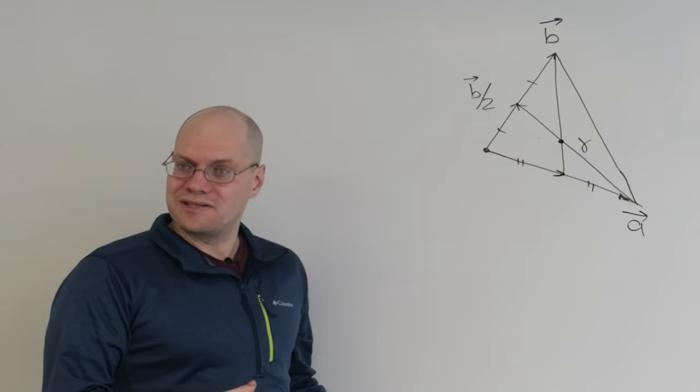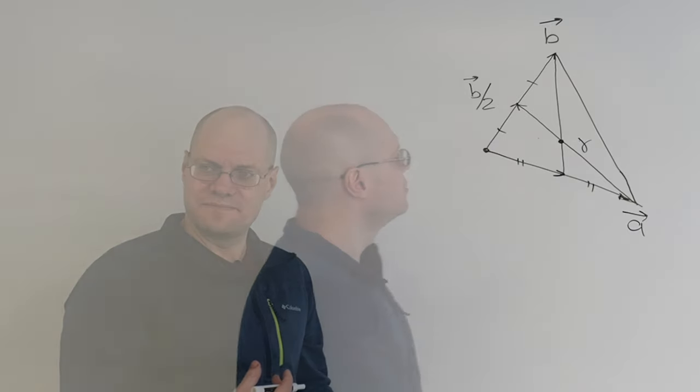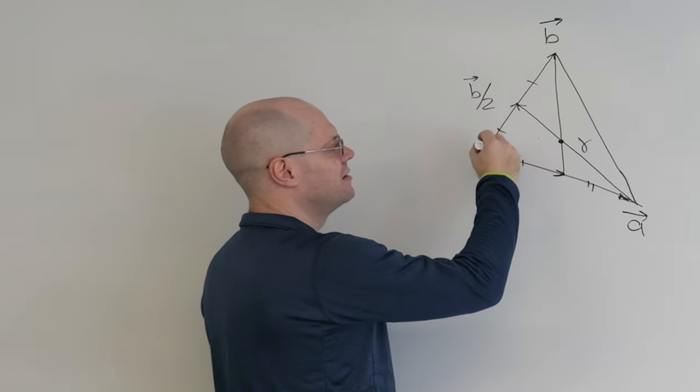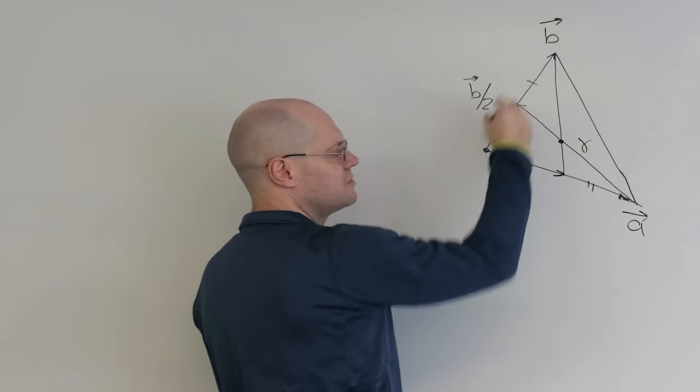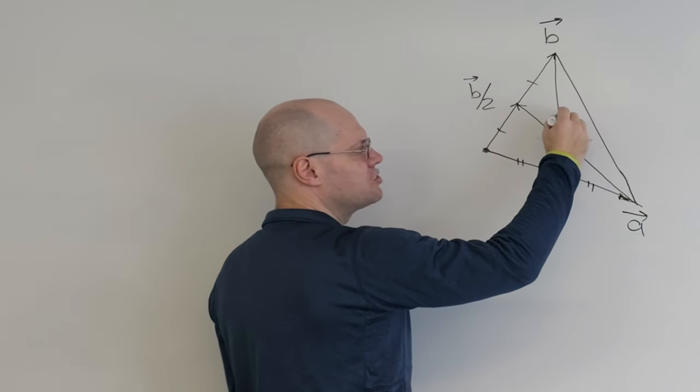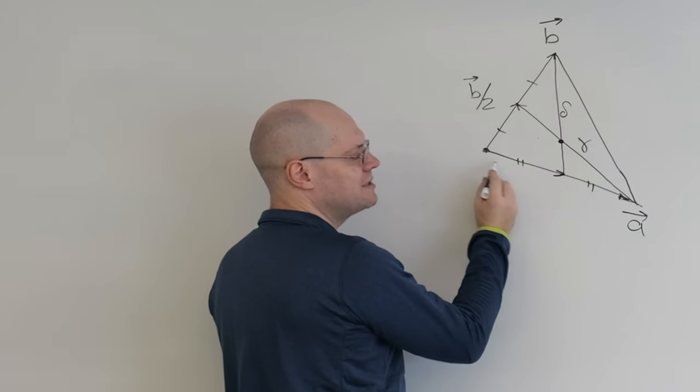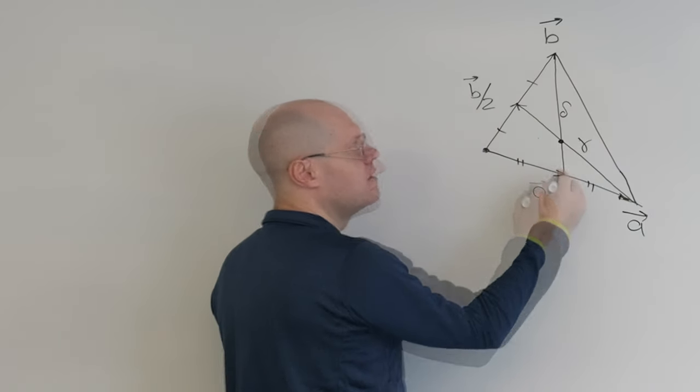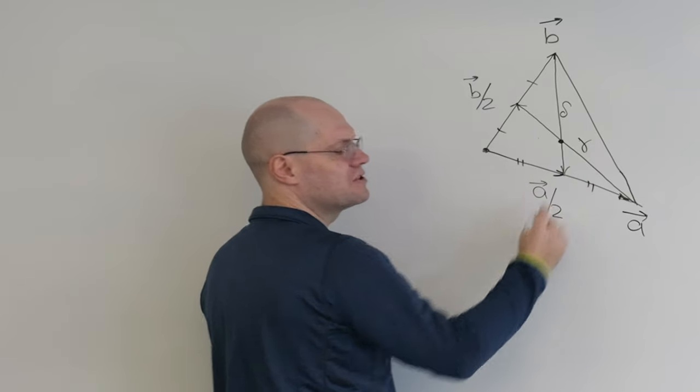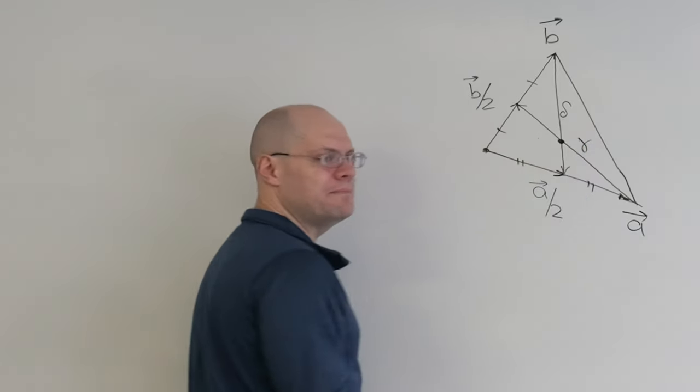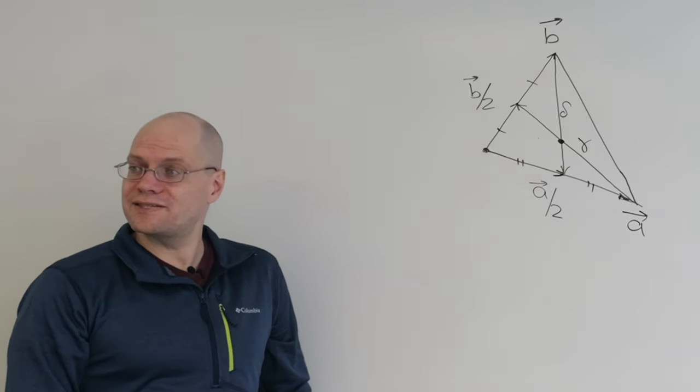Now there's another way to get to the same point. That will give us an equation. So another way to get there is analogously through B. I can go to B, so from the origin go to B, and then a certain amount, delta, of the segment A over 2 minus B. That's this vector right here. And that would also land me at the same point. So the two paths are equal. Let me write it down.